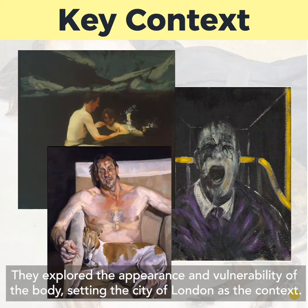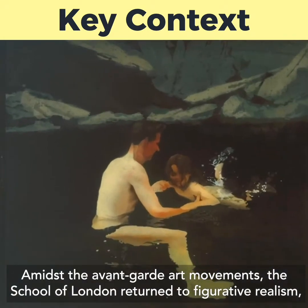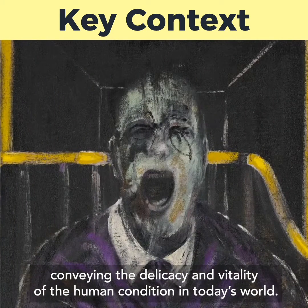They explored the appearance and vulnerability of the body, setting the City of London as the context. Amidst the avant-garde art movements, the School of London returned to figurative realism, conveying the delicacy and vitality of the human condition in today's world.